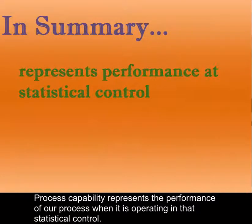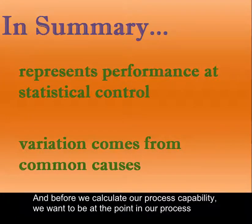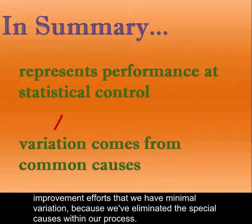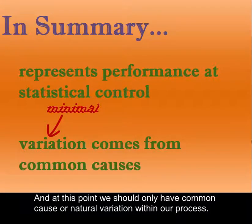Process capability represents the performance of our process when it is operating in a state of statistical control. Process capability is calculated from the total variation that comes from our common causes. Before we calculate our process capability, we want to be at the point in our process improvement efforts where we have minimal variation because we've eliminated the special causes within our process, and at this point we should only have common cause or natural variation.